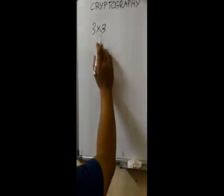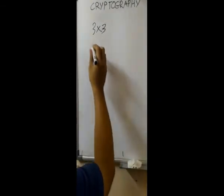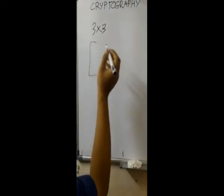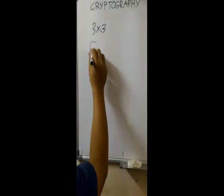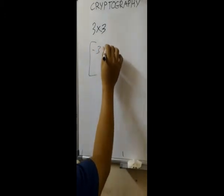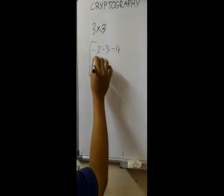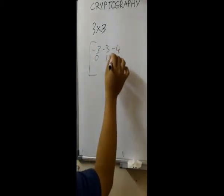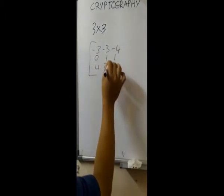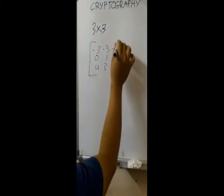Let this 3x3 matrix be an example. We use random numbers: negative 3, negative 3, negative 4, 0, 1, 1, 4, 3, 4.